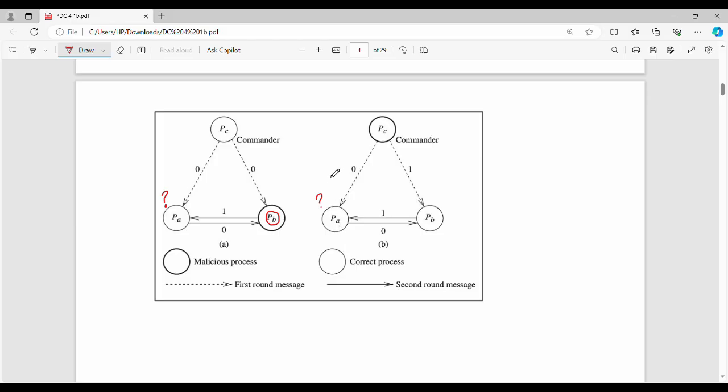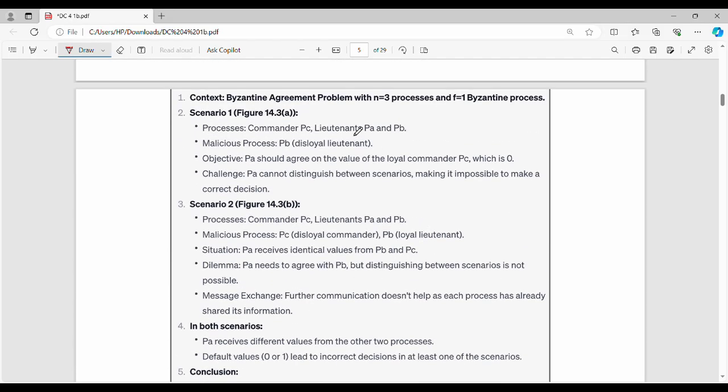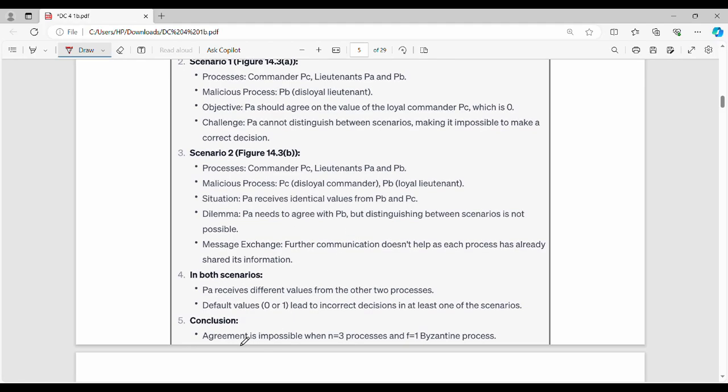So the overall conclusion is: agreement is impossible when number of processes equals 3 and number of failures f equals 1. This is how we demonstrate that consensus cannot be reached in this configuration.